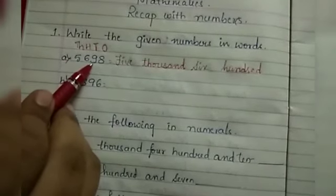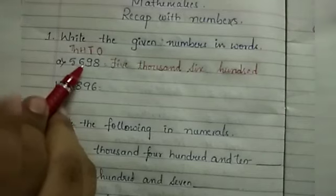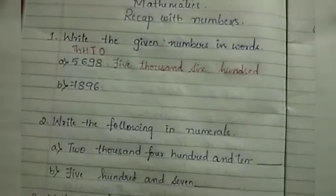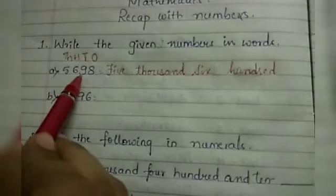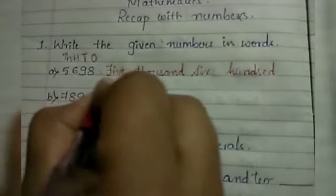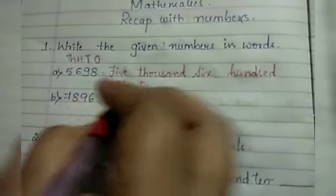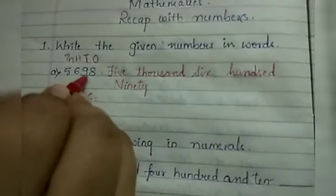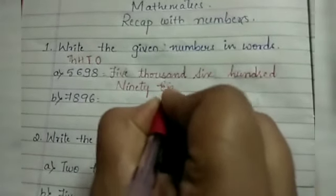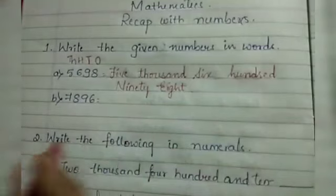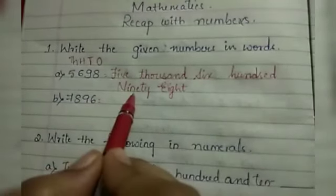Next, 9 is in the 10's place, which gives us 90 — N-I-N-E-T-Y. And 8 is in the 1's place, that is 8 — E-I-G-H-T. So I will read out once again: 5698.